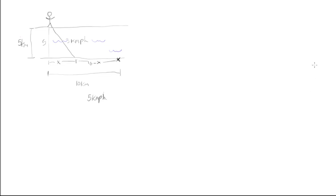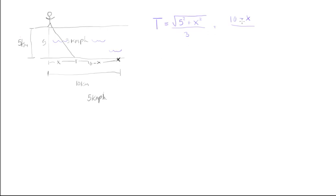What we have to find out is the time it's going to take to get from here to there. The formula is: time equals the swimming distance divided by swimming speed, plus the walking distance divided by walking speed. Using the Pythagorean theorem, the swimming distance is the square root of 5² plus X², divided by 3, plus (10 minus X) divided by 5.